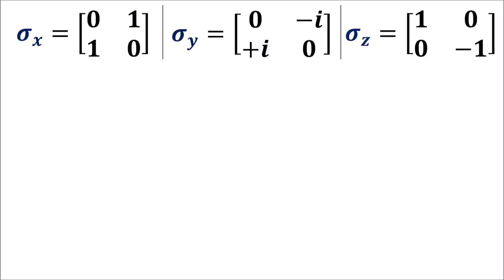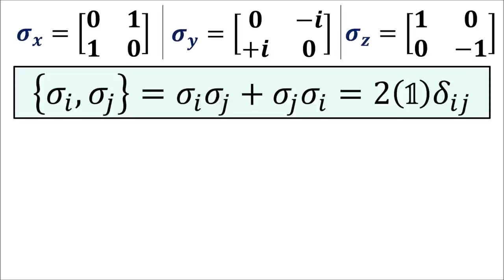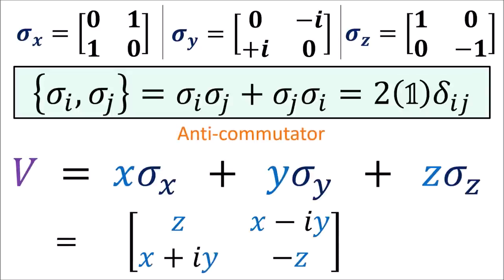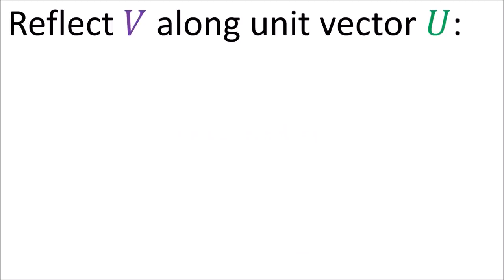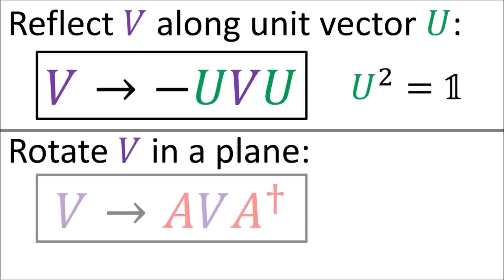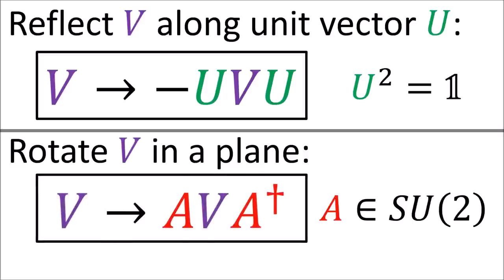So to summarize this video: we saw that the sigma matrices, also called Pauli matrices, obey special anti-commutation relations. And this allows them to easily perform geometric transformations on polyvectors. Reflections are performed by doing negative conjugation on a polyvector. And rotations are performed by doing double-sided transformations with SU(2) matrices.